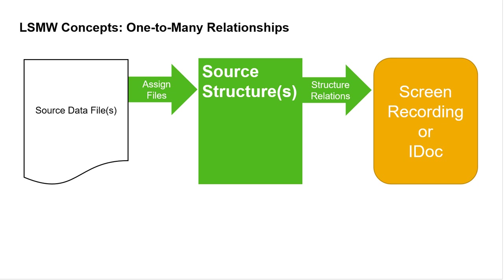In the simple case, there's a one-to-one relationship between the target and the source. If your requirement is to create or update only basic data, then there's only one level of data in the target, and therefore only one source data file is necessary. For example, to update fields on the basic data view of the article master — say the article description or the purchasing organization — only one source data file is required. That file will include the article number (the primary key) and the data elements to be changed. LSMW will execute the T-code once per article number, or create one IDoc per article number — one transaction per primary key value.